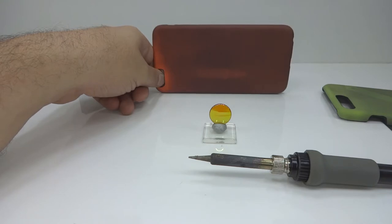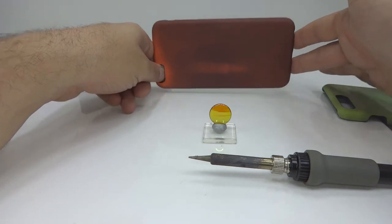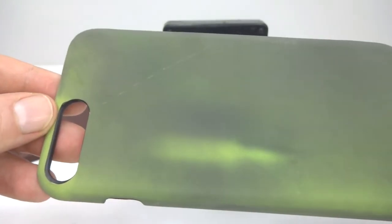After several seconds, we can see an image of the soldering iron appear on the iPhone case. The lens is focusing heat onto the case, making a crude heat camera.